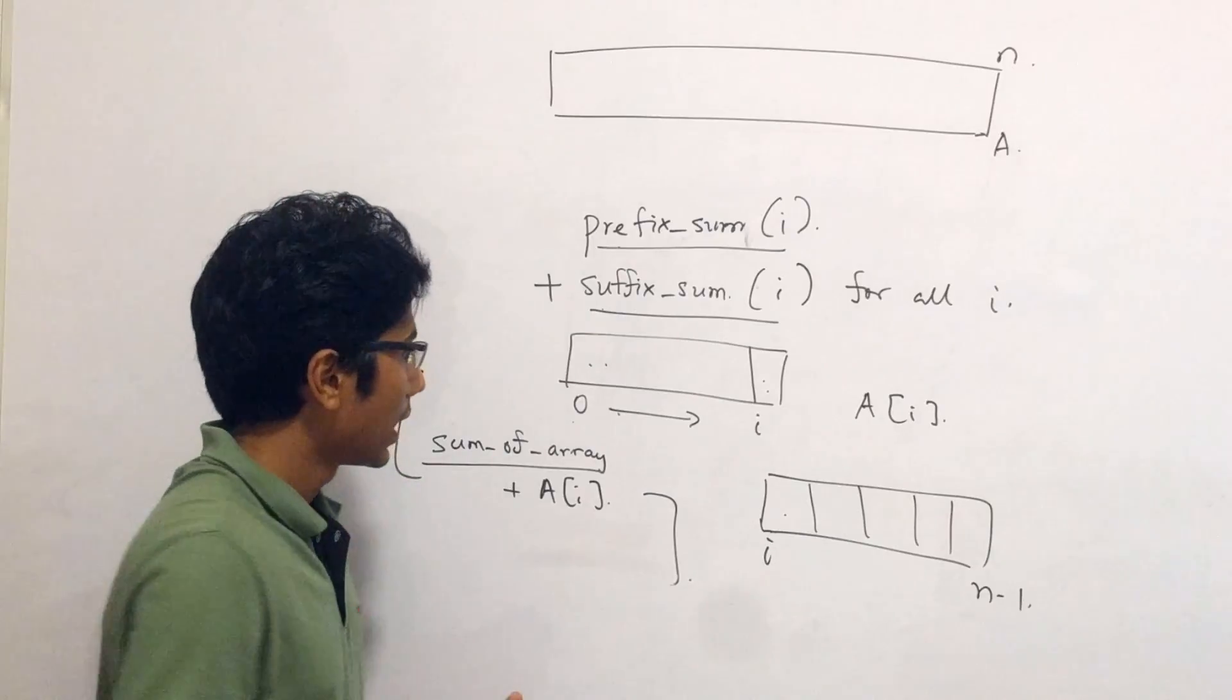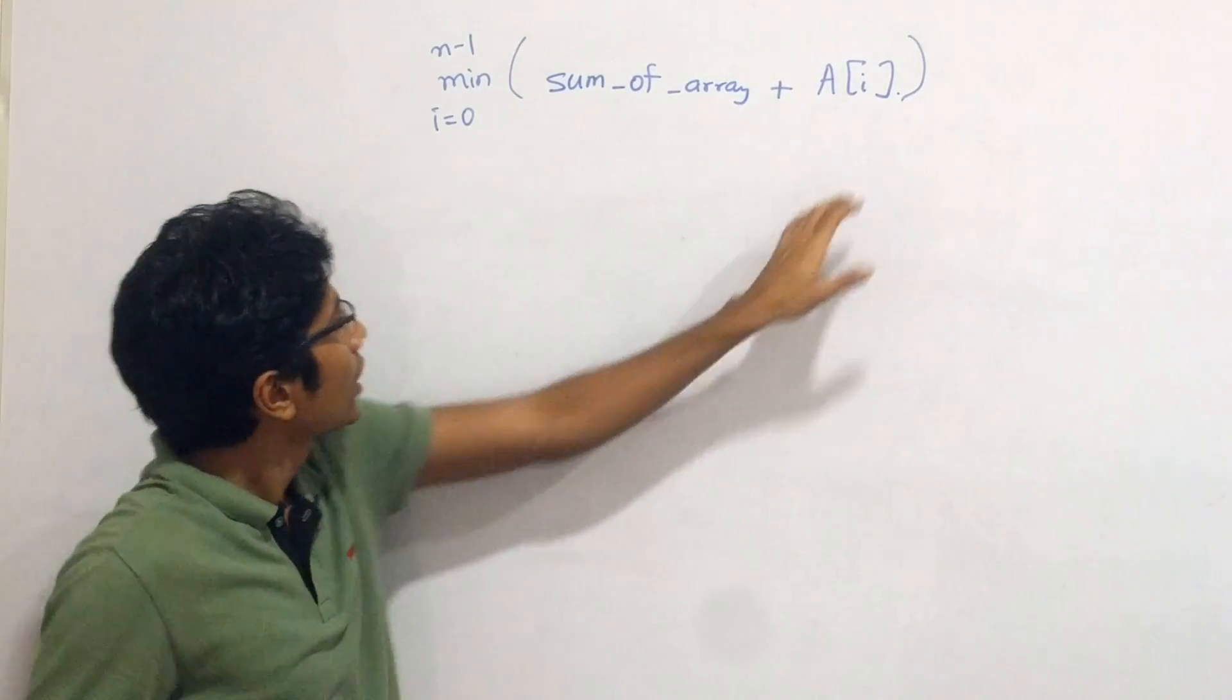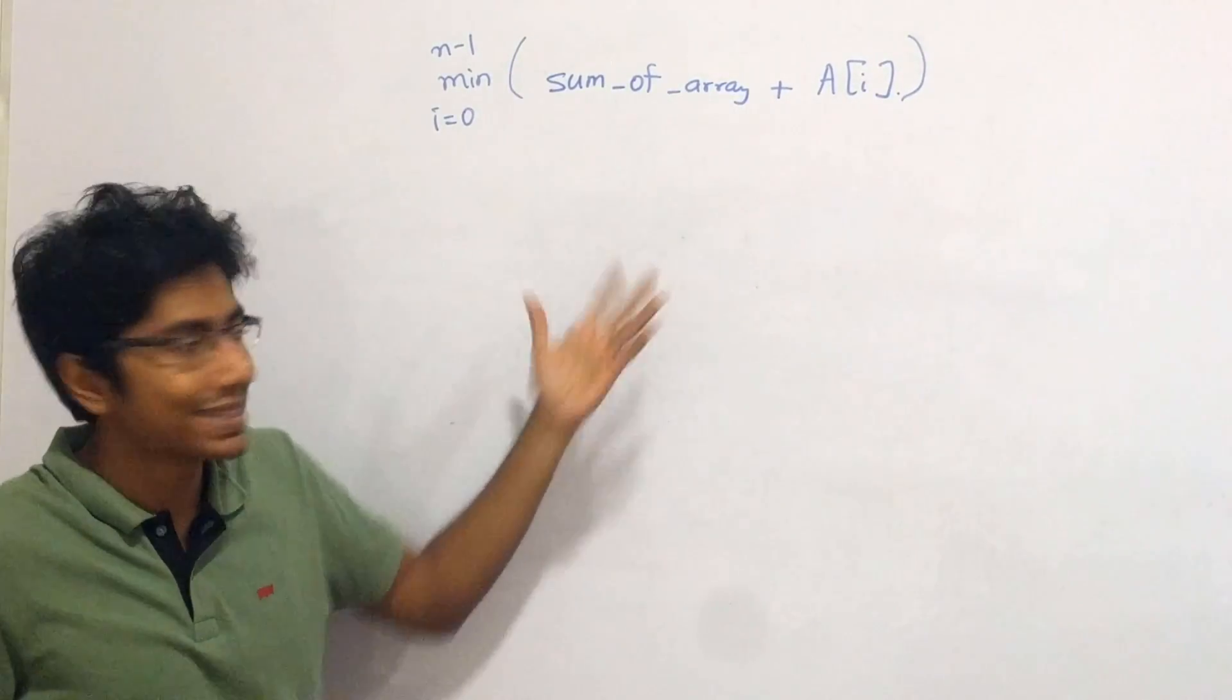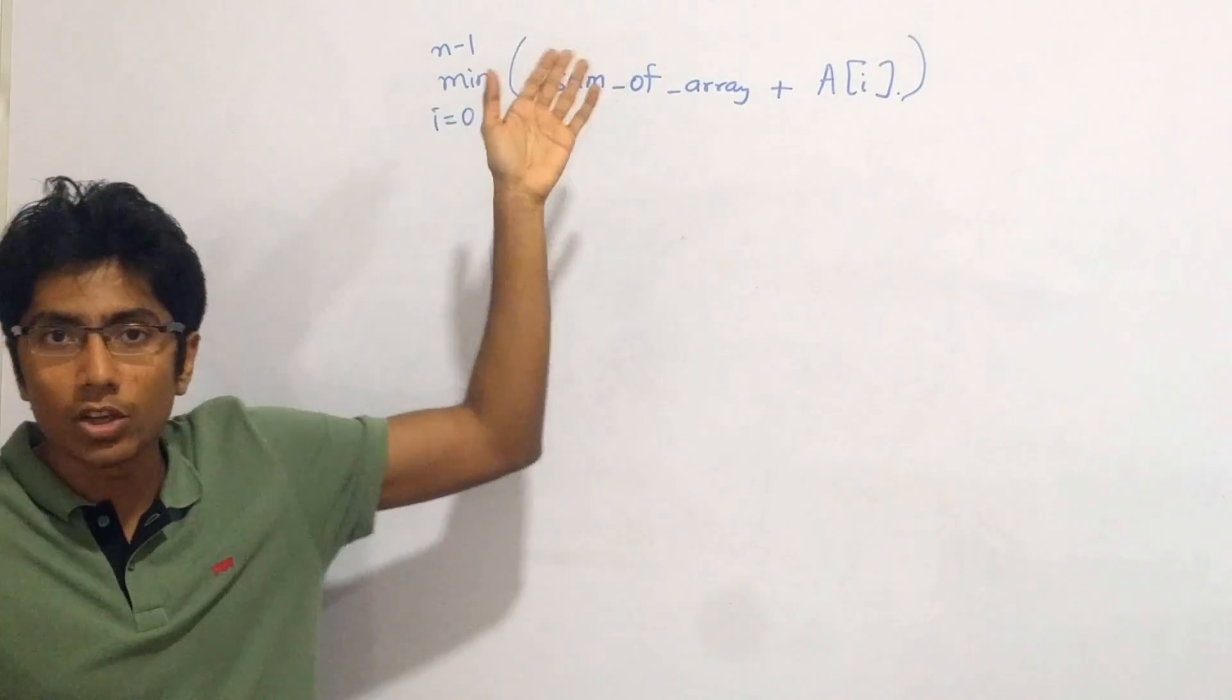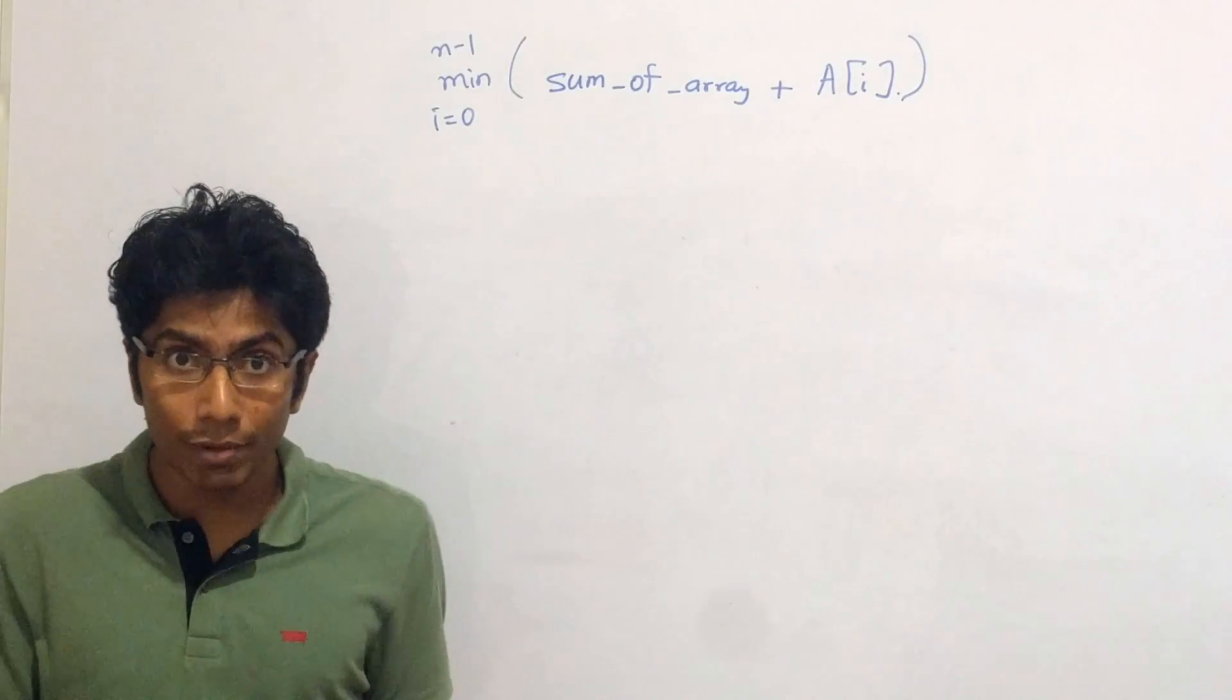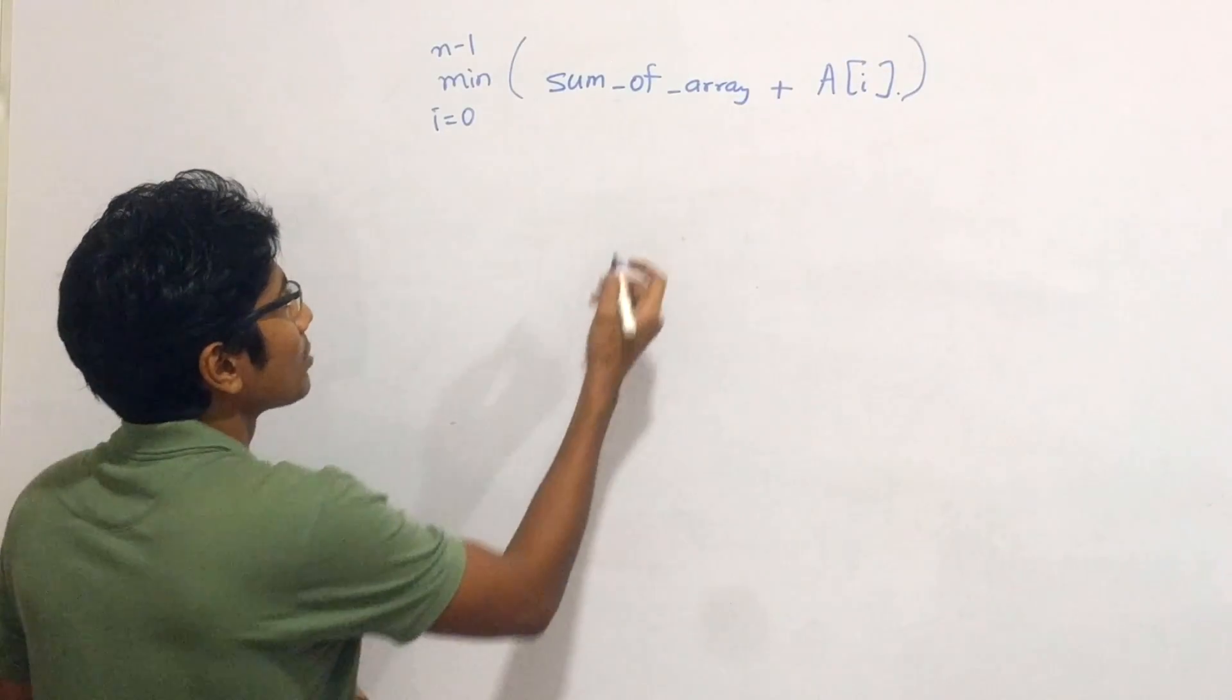The given block of code does that. So we see that this quantity sum of array plus A[i] has to be minimized. Now sum of array is constant, so you can't minimize that. The only thing you have remaining is A[i] and that needs to be minimized for all i from 0 to n-1. This is obvious. All you need to do is find the minimum in the array then. But there are many caveats here. There are some special cases.